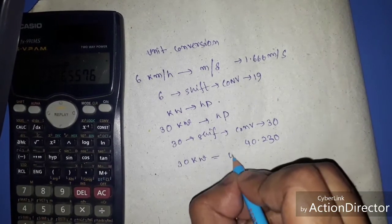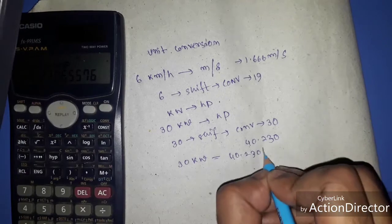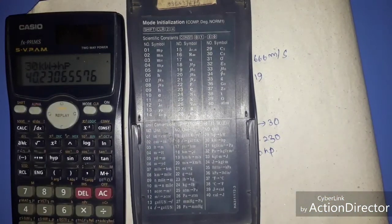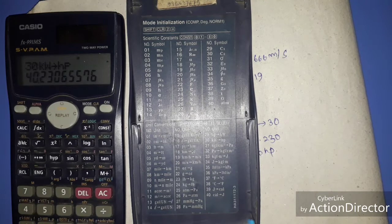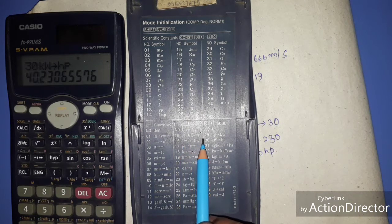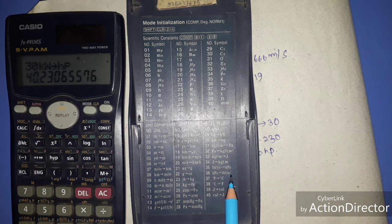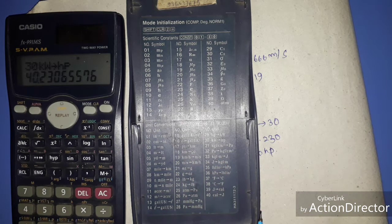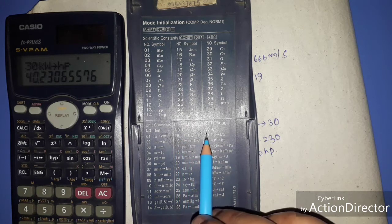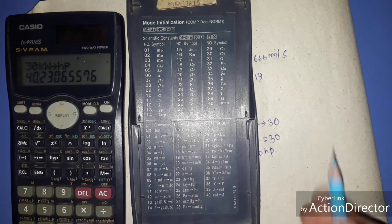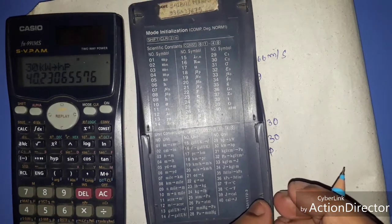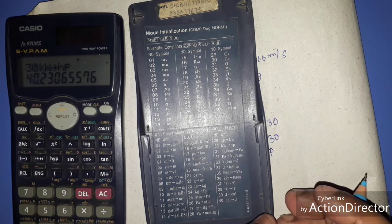So 30 kilowatt is equivalent to 40.230 horsepower. By using same method we can easily convert 40 units, we can easily convert gallon to liter, liter to gallon, etc. So it is very simple if you only remind that we have to press shift, convert and the respective number. So it's easy, thank you.